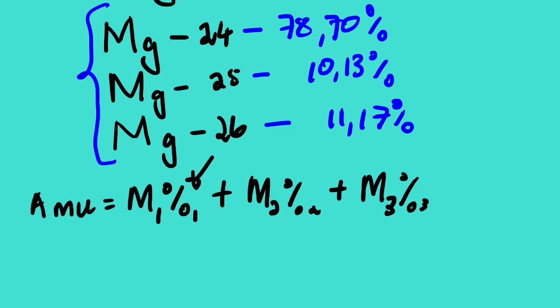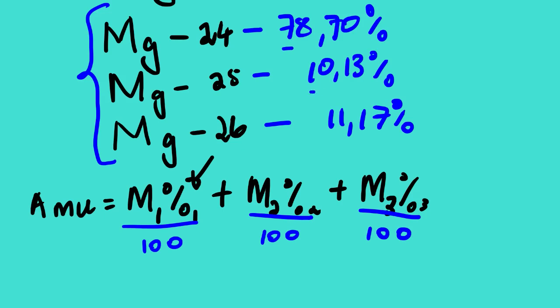We can actually do something with the equation — we can simply divide each product by 100. So we can take the percentages as they are and divide by 100 within each term. But I prefer that we actually convert the percentages to decimals before we substitute.